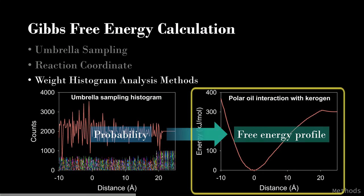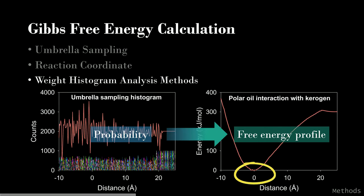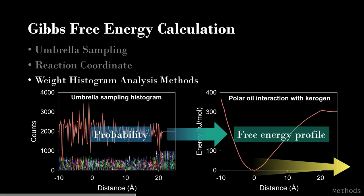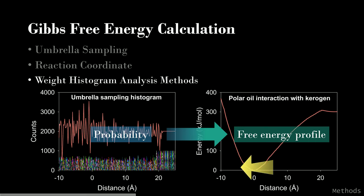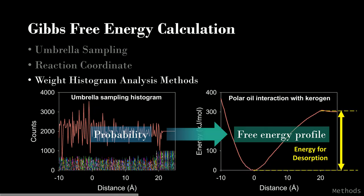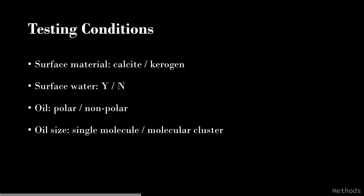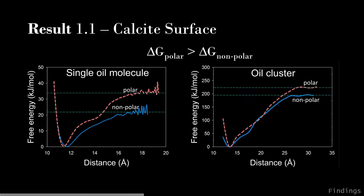This is the oil interaction with the kerogen surface. Distance zero is where the oil is fully adsorbed on the surface. Moving oil away from the surface requires higher energy due to strong interaction; moving oil closer causes strong repulsion. The difference between the plateau and minimum is the amount of energy required for desorption. I tested four parameters: calcite vs. kerogen surface, surface water vs. none, polar vs. non-polar oil, and single oil molecule vs. molecular cluster. The results show that at the calcite surface, polar oil requires higher energy to be desorbed than non-polar oil, for both single oil molecules and oil clusters.